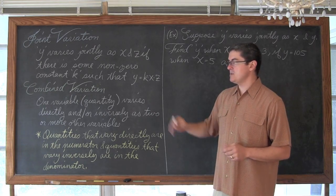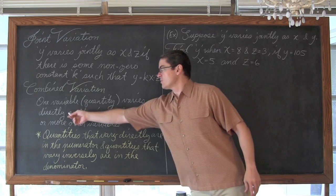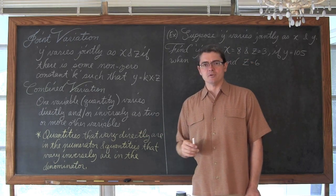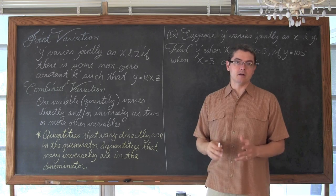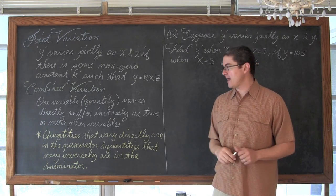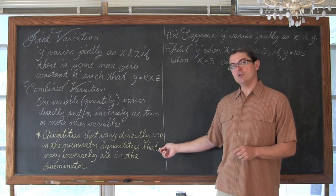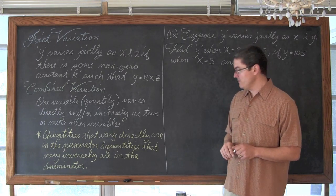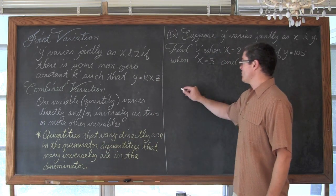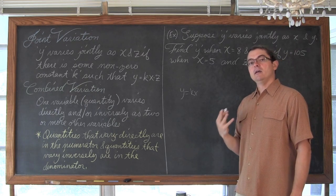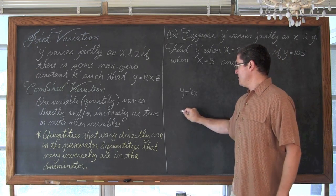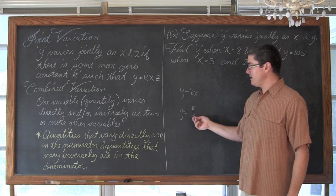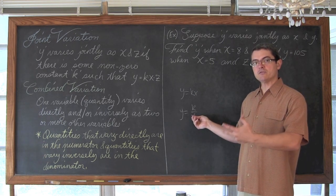Combined variation is when one variable or quantity varies either directly and/or inversely as two or more other variables or quantities. You don't have to just have three quantities or variables in your equation other than a constant — it can be more complicated than that. Quantities that vary directly are going to be in the numerator, and quantities that vary inversely are going to be found in the denominator, because direct variation is y equals kx and inverse variation is y equals k over x.